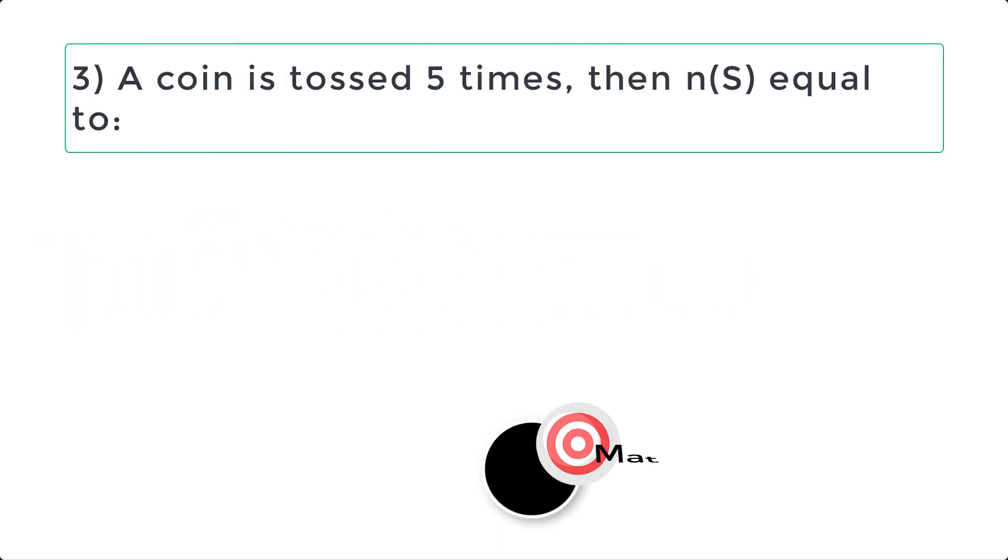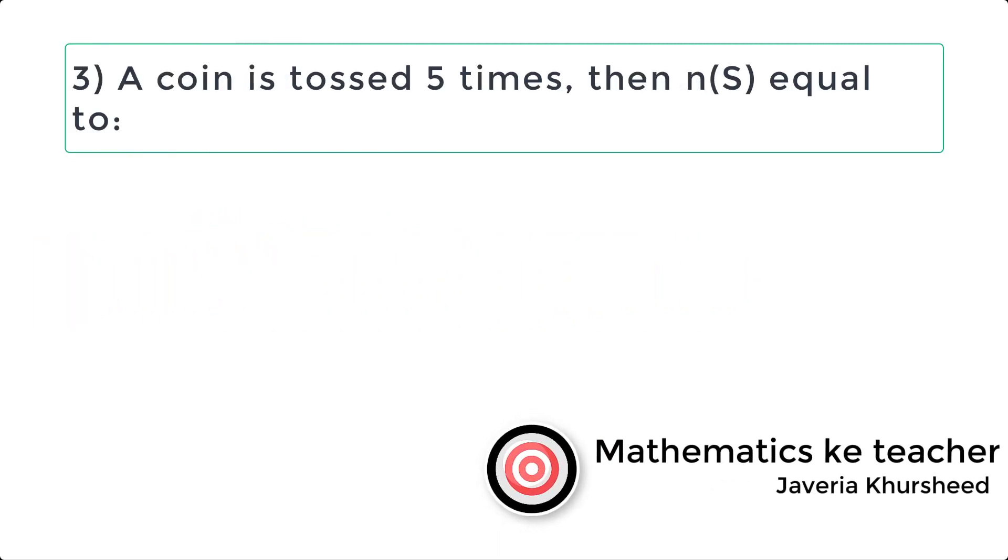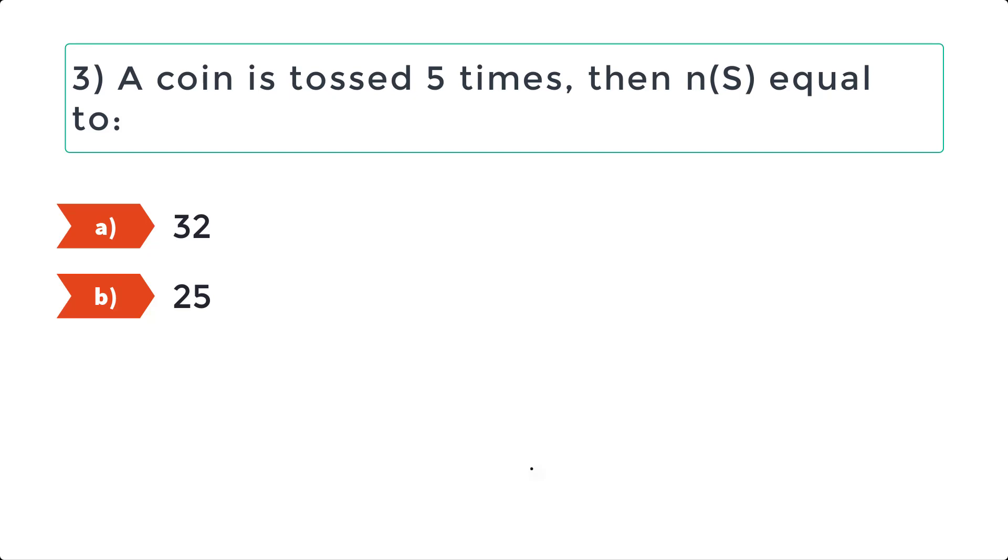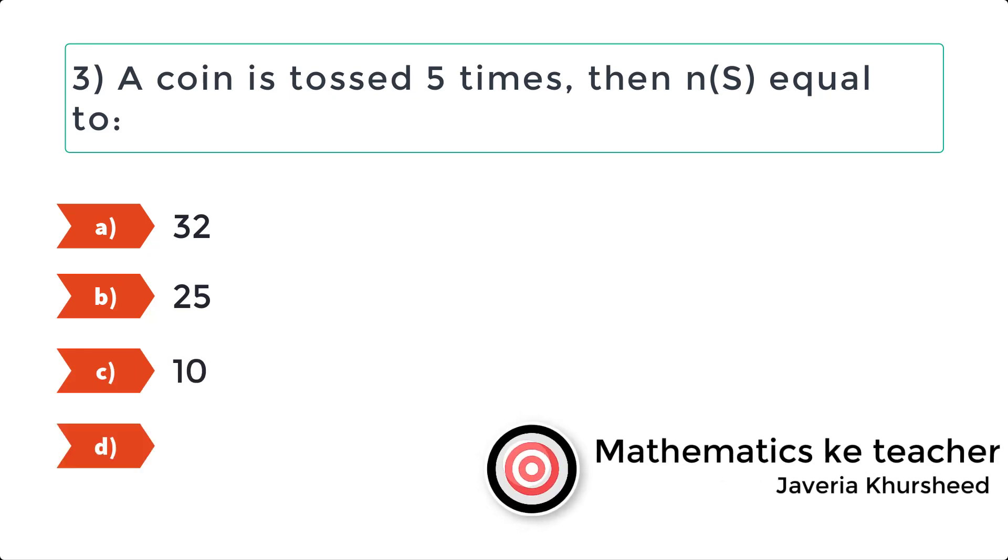Question 3: A coin is tossed 5 times, then n(S) equal to. A. 32, B. 25, C. 10, D. 20.